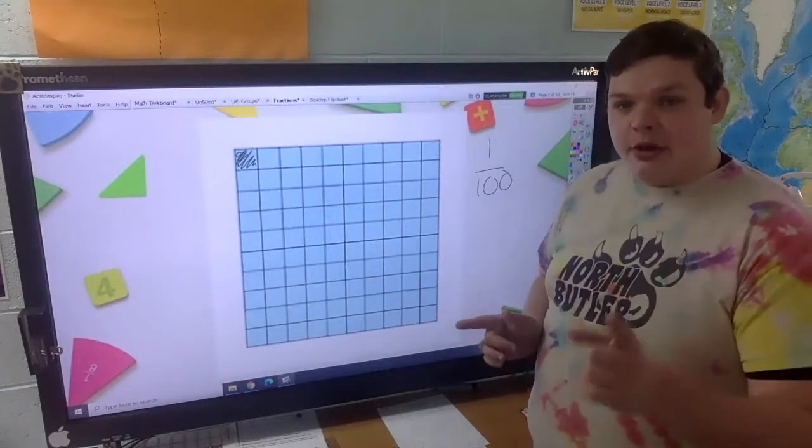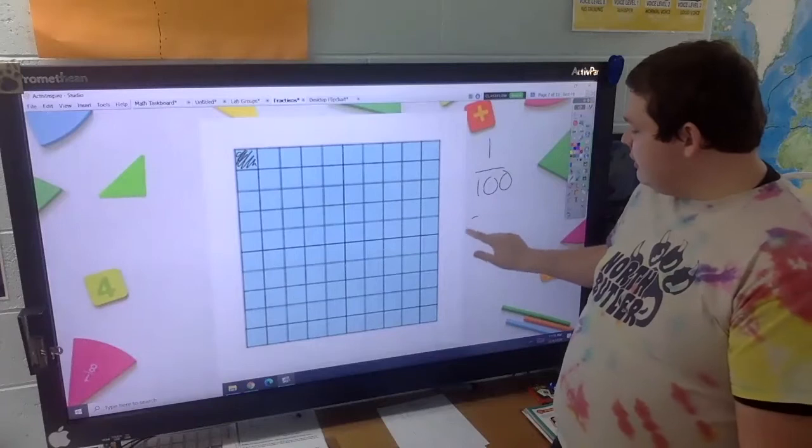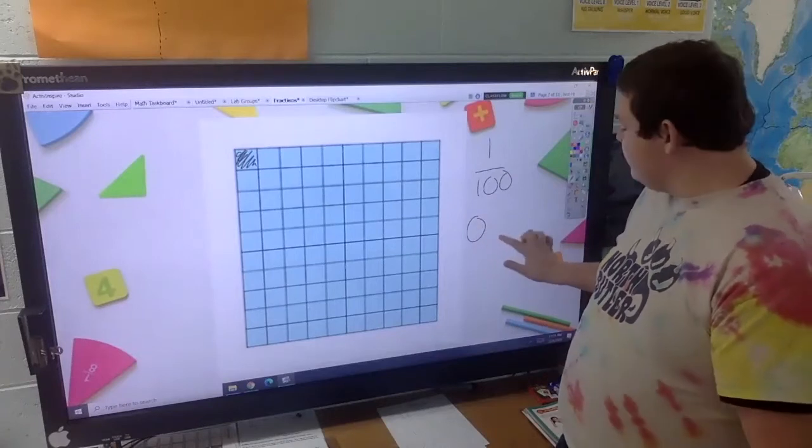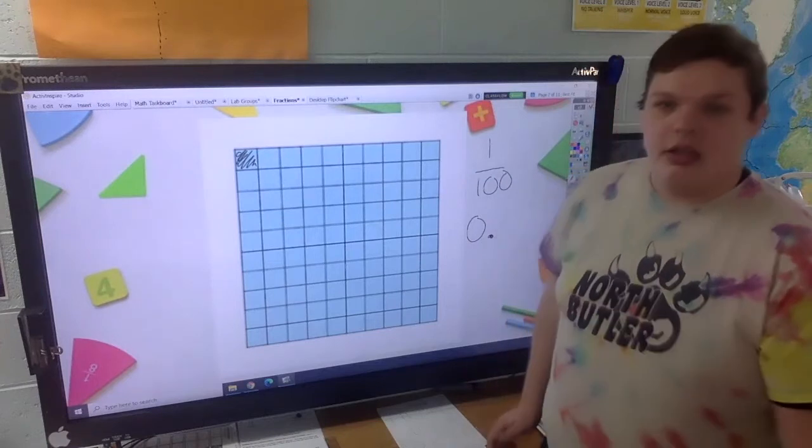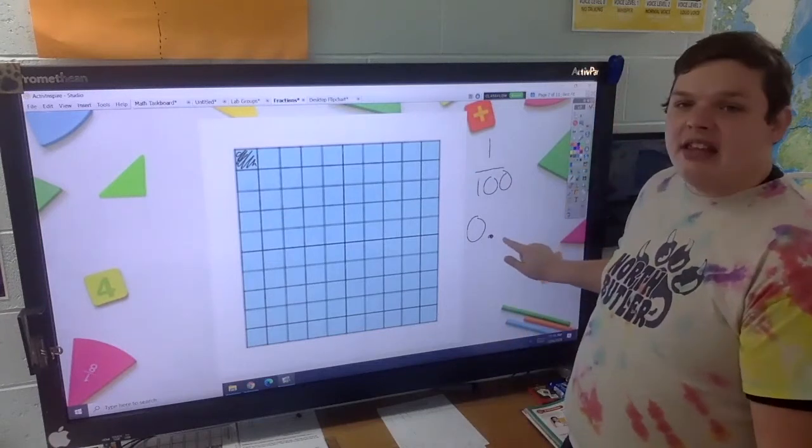But as a decimal, we need to do zero because we have zero wholes. We need our decimal point and we need to go out to the hundredths place. So for instance, this is the tenths place.